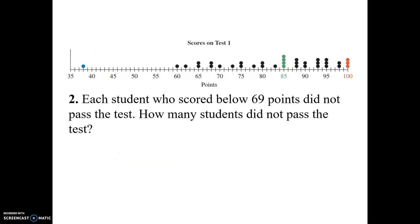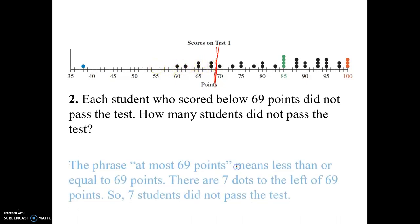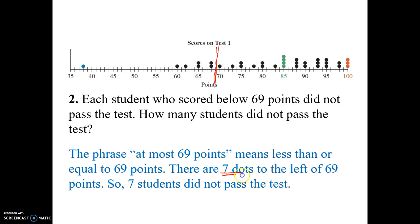Each student who scored below 69 points did not pass the test. How many students did not pass? So let's look at 69. 66, 67, 68, 69 points. Anyone below 69 did not pass. So how many students didn't pass? Remember each dot represents a student. So we have one, two, three, four, five, six, seven students did not pass the test. There are seven dots to the left of 69 points. So seven students did not pass the test.